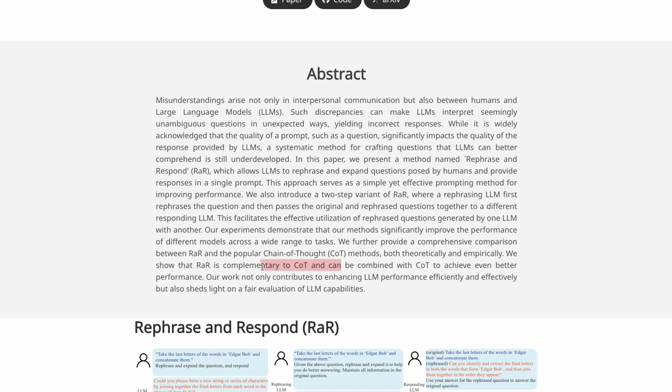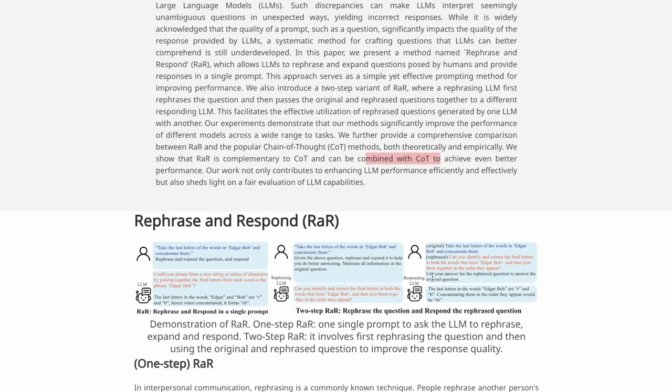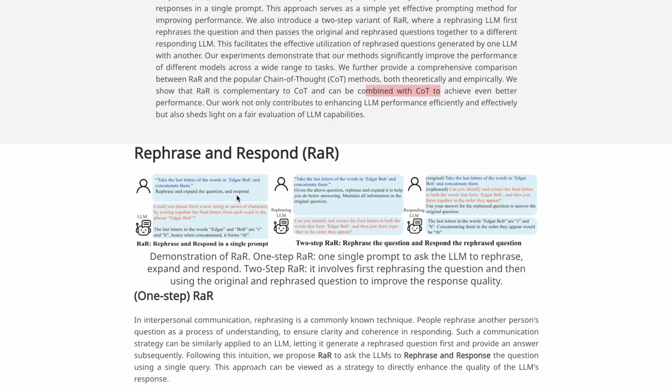And this method significantly improves the performance of model across wide range of tasks. This is complementary to CoT, which is Chain of Thought, and if combined together with Chain of Thought, it is seen to be even better compared to their standalone versions. Cool, so let's try and understand the two-step RAR method.